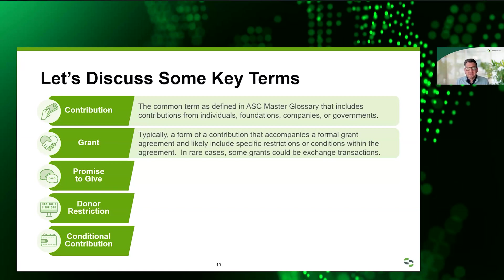Grant agreements might even have some conditions that need to be met before you have the right to receive those funds or potentially having to return them. In rare circumstances, there could be grants that are exchange transactions — for example, an organization that grants money to a not-for-profit to do certain research and development that could result in patents or intellectual property specifically retained by the resource provider where they're able to monetize the results. That grant would be an exchange transaction, but that's typically more rare.